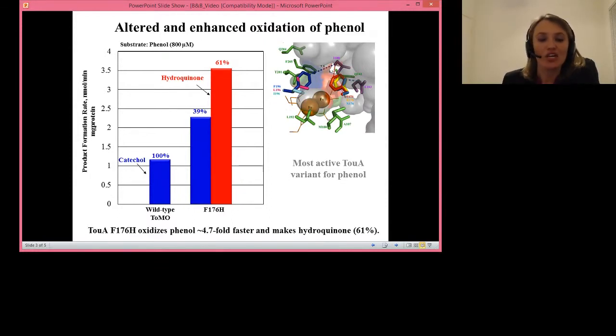It also made two-fold more 2-naphthol from naphthalene, and its regiospecificity of phenol from toluene changed from 51% to 73% para-cresol.